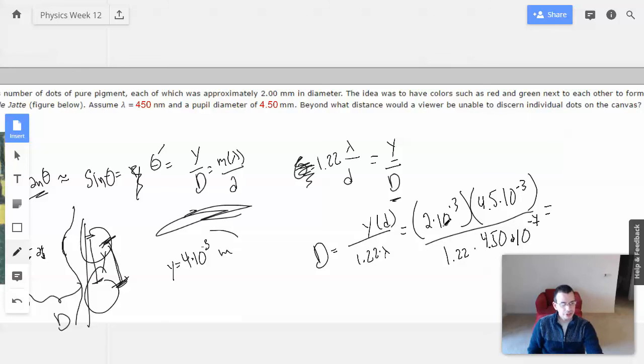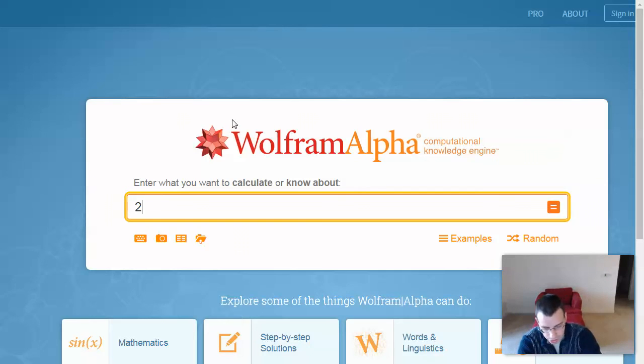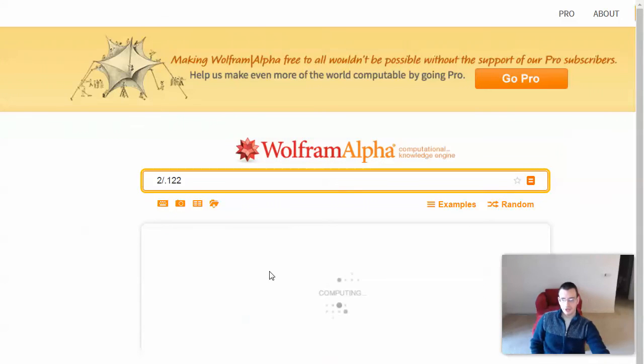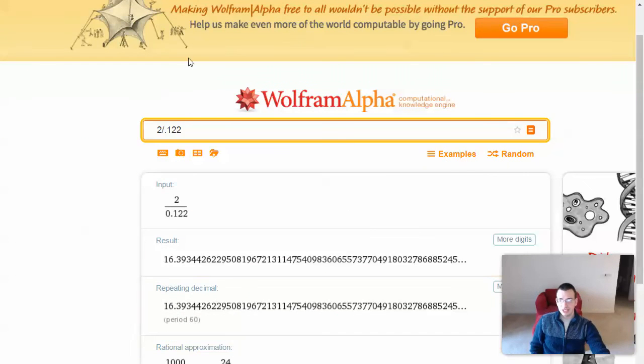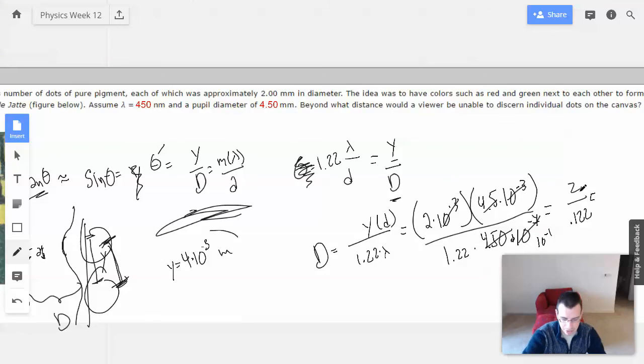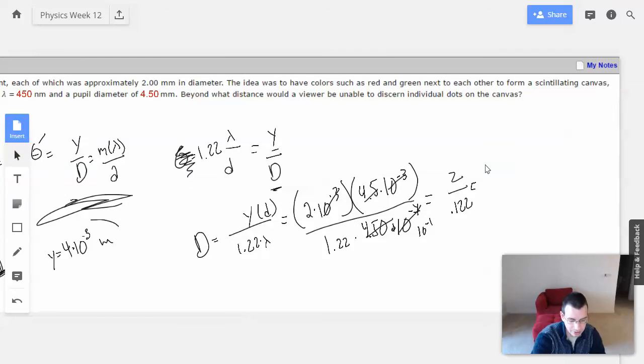This will be 10 to the negative sixth. These guys will cancel, and I'll have 2 divided by 0.122. 2 divided by 0.122, and I get 16.39 meters.